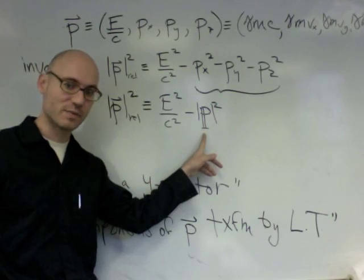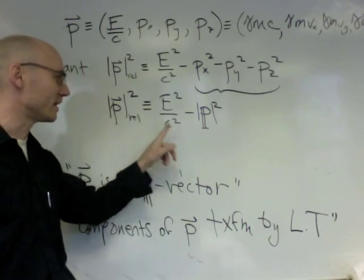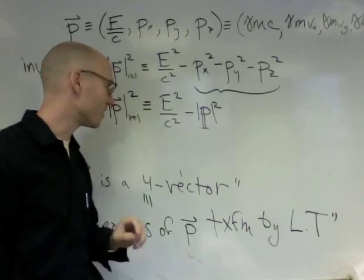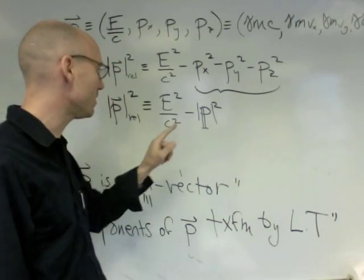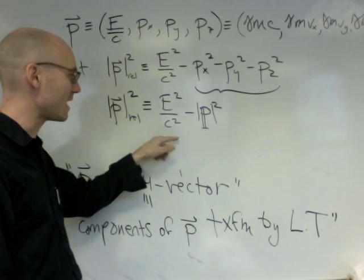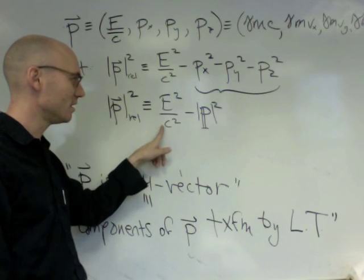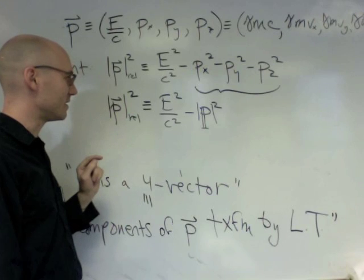Where this is now the magnitude of the three vector momentum, which I'm drawing here as boldface because I want to distinguish our four vectors from our three vectors. So here's a three vector momentum squared, and if we subtract it off from the energy with the unit set right, squared, we get this invariant.